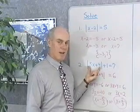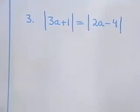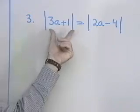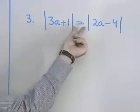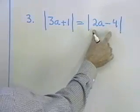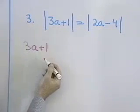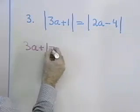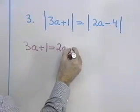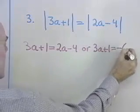That is, the absolute value of that quantity plus 1 will always turn out to be 7. Let's look at one last example. The absolute value of 3a plus 1 is equal to the absolute value of 2a minus 4. The only way two numbers can have the same absolute value is if the numbers — in this case 3a plus 1 and 2a minus 4 — are equal to each other, or if they are opposites of each other.